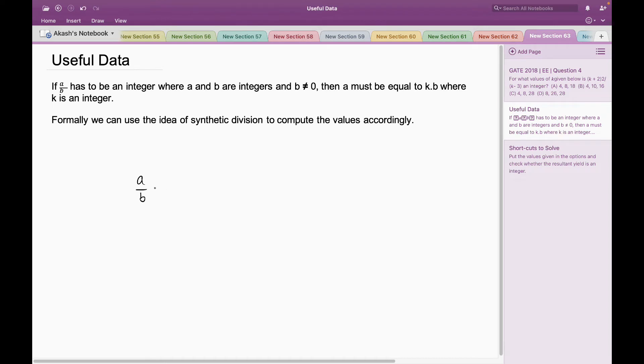If I have to make the fraction a/b belonging to an integer where b is not equal to 0 and a and b belong to Z, the set of integers, then a must equal k times b where k also belongs to the set of integers. Also, we can use the idea of synthetic division to compute the values accordingly.